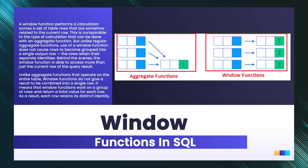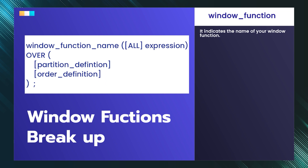A window function works on a group of rows and returns values for each row, so each row retains its distinct identity. In terms of syntax, after specifying the window function name, we use OVER, which specifies the window clause. There are two types of expressions: PARTITION BY and ORDER BY. PARTITION BY divides data into separate partitions. ORDER BY specifies the order of rows within each partition. This video primarily focuses on interview aspects and how window functions improve performance over GROUP BY, which degrades SQL performance.